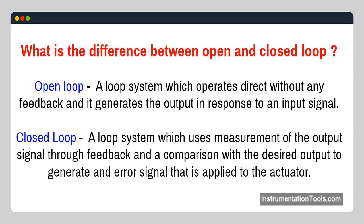What is the difference between open loop and closed loop? Open loop: a loop system which operates directly without any feedback and generates the output in response to an input signal. Closed loop: a loop system which uses measurement of the output signal through feedback and comparison with the desired output to generate an error signal that is applied to the actuator.